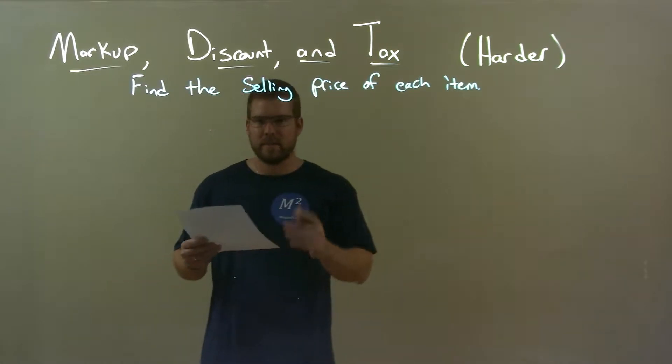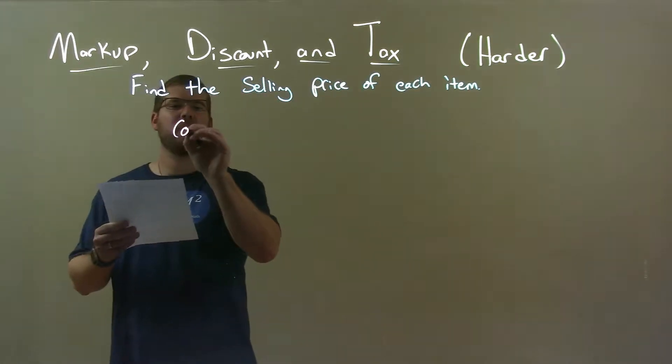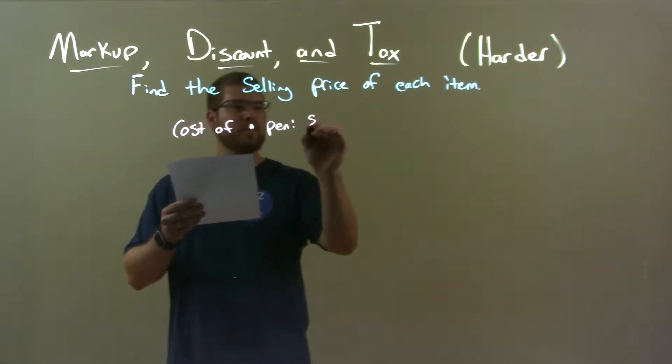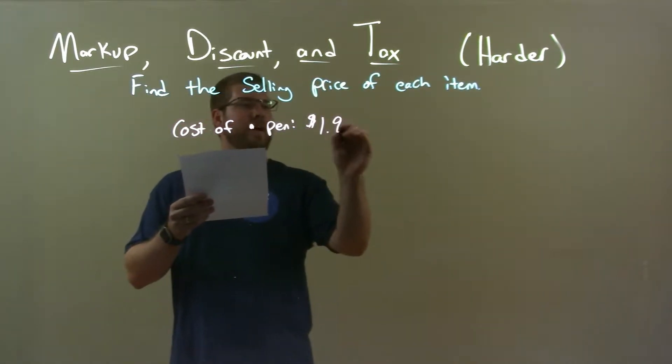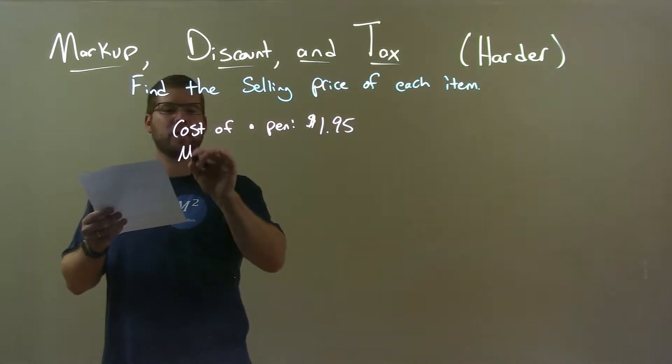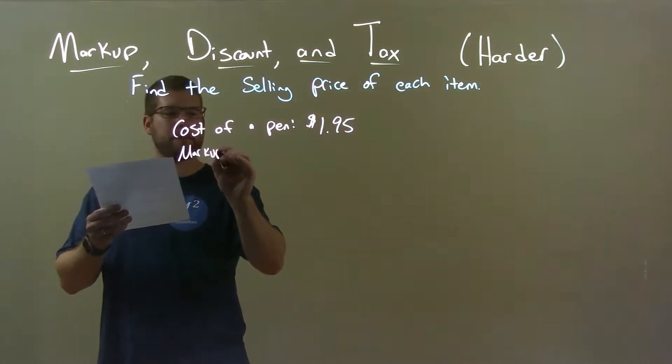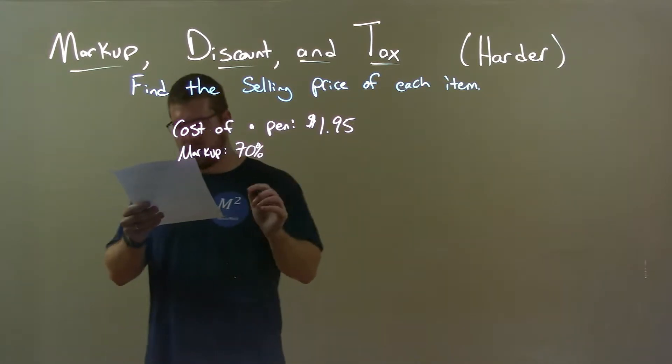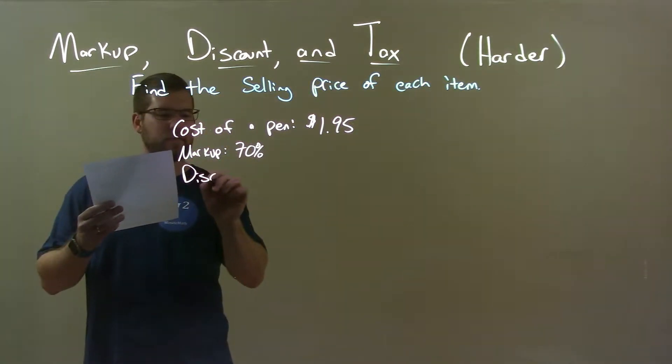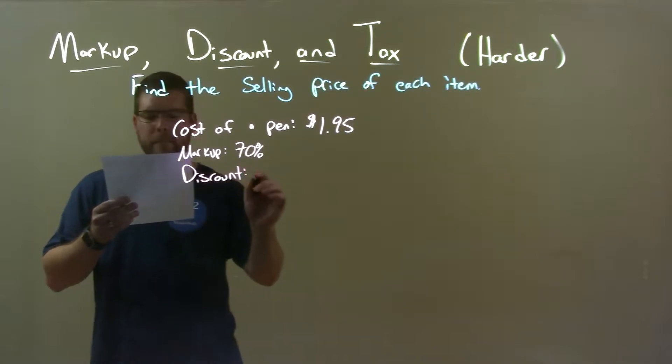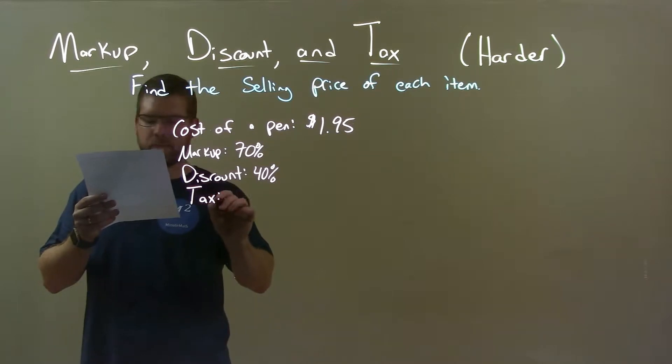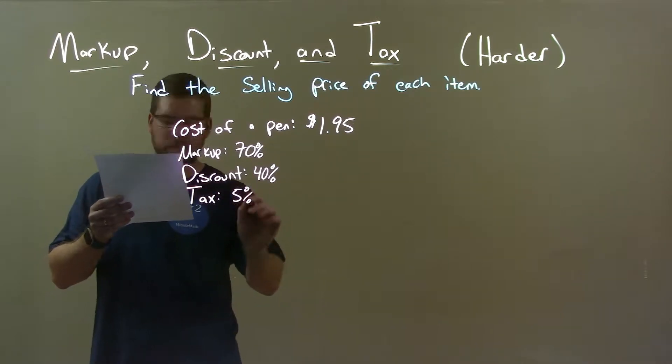So, if I was given this item, the cost of a pen is $1.95. Its markup is 70%. Its discount is 40%. And its tax is 5%.